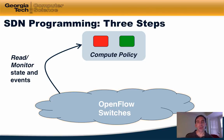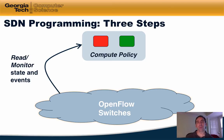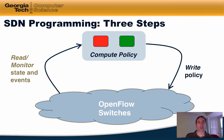Based on that state and the events that the controller receives, it can compute forwarding behavior for the switches in the network based on policies that the network operator specifies. It's possible that the controller may have multiple policies that either conflict or otherwise need to be composed. We will talk about policy composition in the next lesson. After computing the policy, the controller must write that policy back to the OpenFlow switches. In this lesson, we will focus on aspects of SDN programming that allow a controller to read and monitor state.